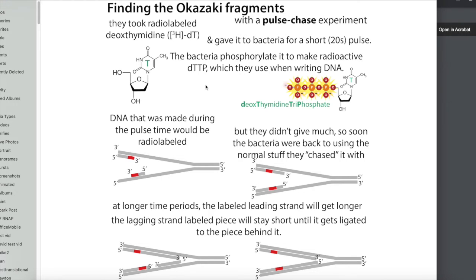And so what they're doing is they're using a pulse of radioactivity. So they add this radioactive DTTP just for a short time, like 20 seconds. So the DNA that's made during that pulse time would be radio labeled. And then they would do a cold chase. So sometimes we call radioactive things like hot, and then non-radioactive stuff would be cold. So they do this hot chase, this hot pulse, and then they're going to do this cold chase. So they chase it with normal DTTP. And so now any, the strands can still get longer, but they're going to, that what the longer stuff is going to be non-radioactive. So at longer time periods, the labeled leading strand will get longer, but the lagging strand labeled piece will stay short for a while, but then it's going to get ligated to the piece behind it and it'll get long.